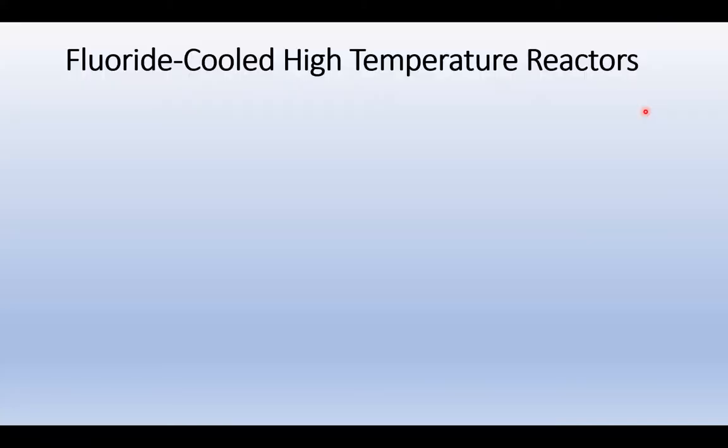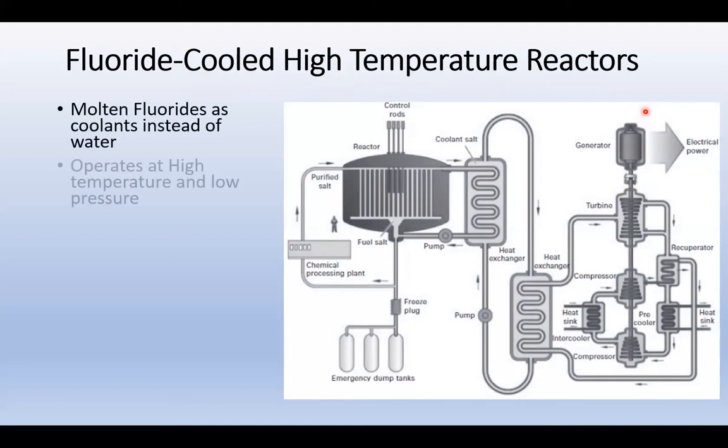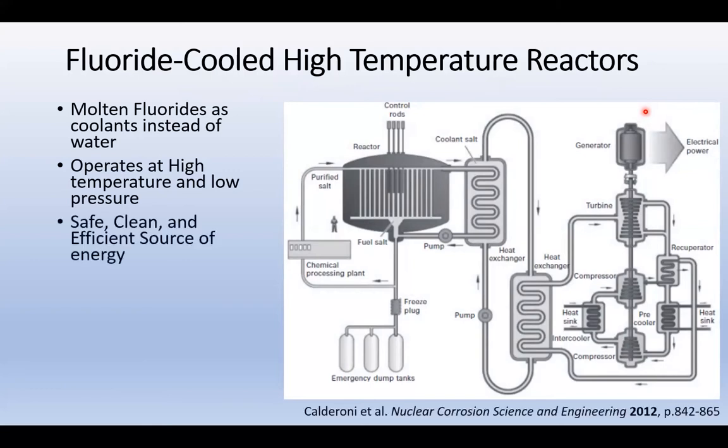FHRs, or Fluoride-Cooled High Temperature Reactors, are fourth generation nuclear reactors that use molten fluoride salts as coolants instead of water. They operate at much higher temperatures and much lower pressures than traditional water-cooled reactors, which should prevent incidents like Fukushima from occurring. They are safer and have potential to be one of the cleanest and most efficient sources of energy for the world.